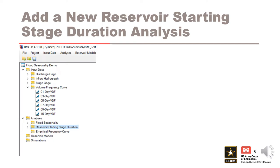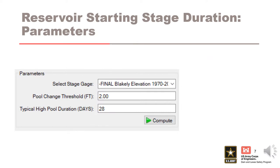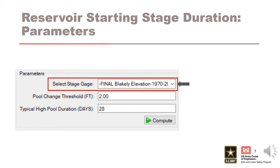To add a new starting stage duration analysis, right-click on the analysis tab or select one from the drop-down menu. You'll enter a name, a description, and then enter the analysis parameters. There are three parameters to select for a reservoir starting stage duration analysis. The first is a stage gauge, selected from a drop-down menu from your previously entered stage gauge input data. A representative period of record for current operations should typically be used. We don't want to use stage data that is not representative of the conditions we are assuming for our risk assessment.